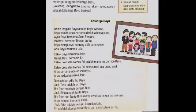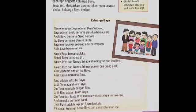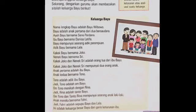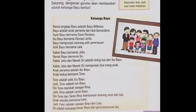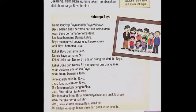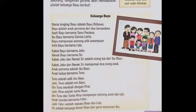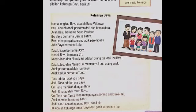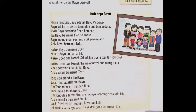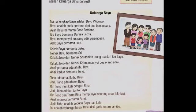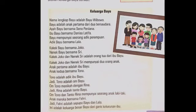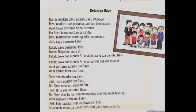Kakek Joko dan Nenek Sri mempunyai dua orang anak. Anak pertama adalah ibu Bayu. Anak kedua bernama Tono. Tono adalah adik ibu Bayu. Jadi Tono adalah om Bayu. Om Tono menikah dengan Rina, jadi Rina adalah tante Bayu. Om Tono dan Tante Rina mempunyai seorang anak laki-laki bernama Fahri. Jadi Fahri adalah sepupu Bayu dan Lala. Ini adalah keluarga besar Bayu dari garis keturunan ibu.